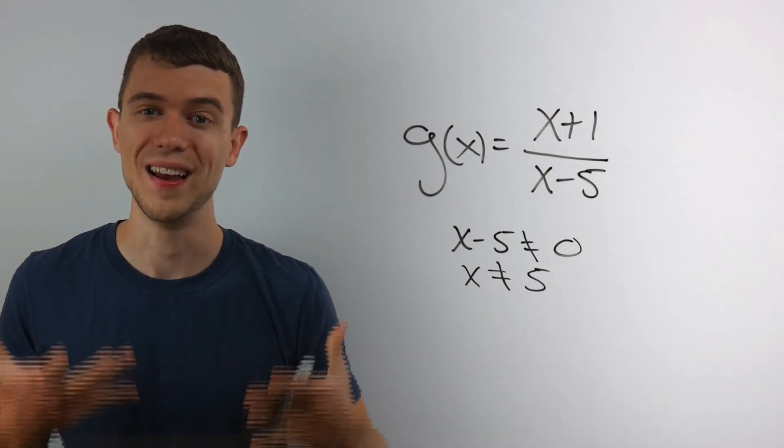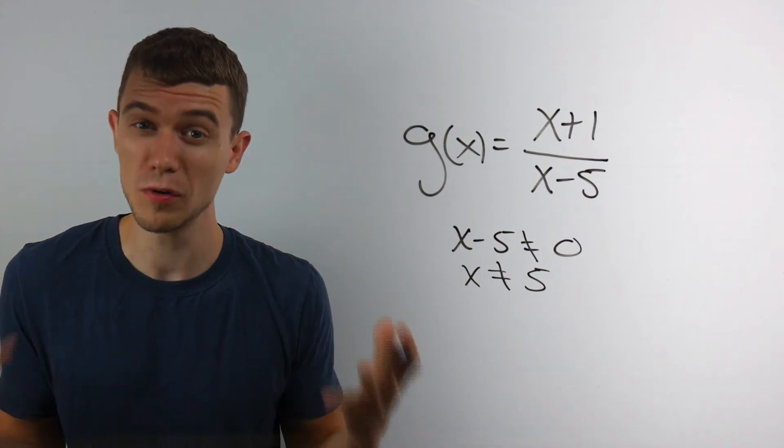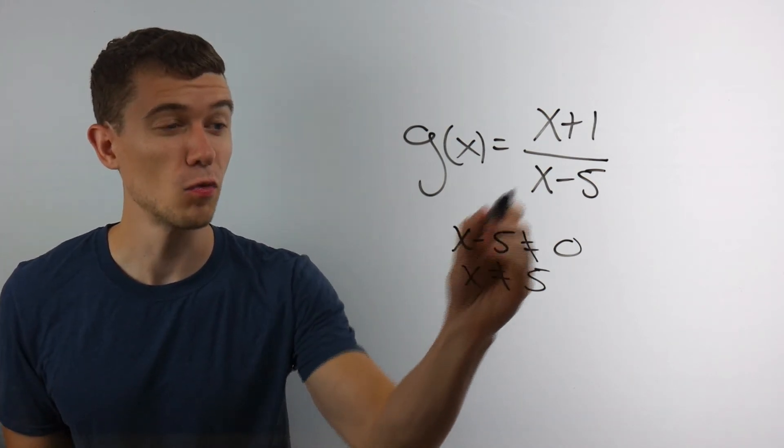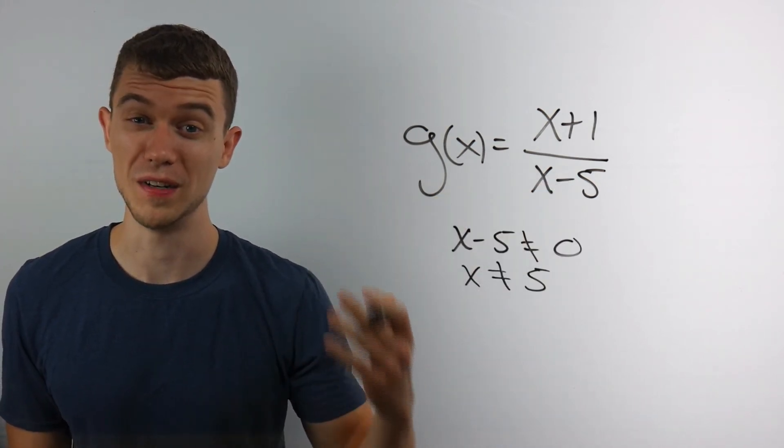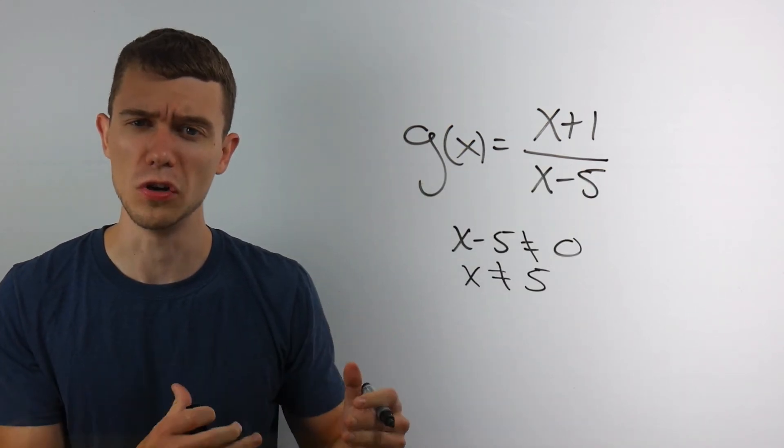We have the domain. X cannot be five. Anything else is good. You can be zero in the top. It's just if we were to plug in five, we would be dividing by zero. We'd get five minus five is zero in the denominator. That's no good.